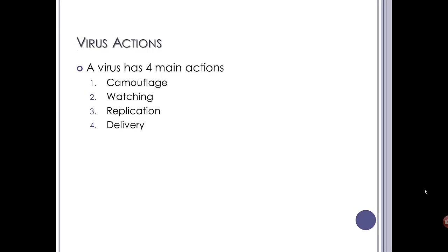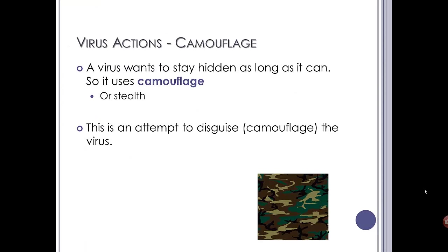Every virus does four main actions: camouflage, it watches, it replicates, and it delivers. A good virus wants to stay hidden as long as it can. Just like in the human body where the immune system will attack it, you employ anti-virus software to remove viruses. So it uses camouflage — this may mean changing the code, adding dummy instructions — but that's covered more at higher. It's just an attempt to disguise the virus so it's not picked up.